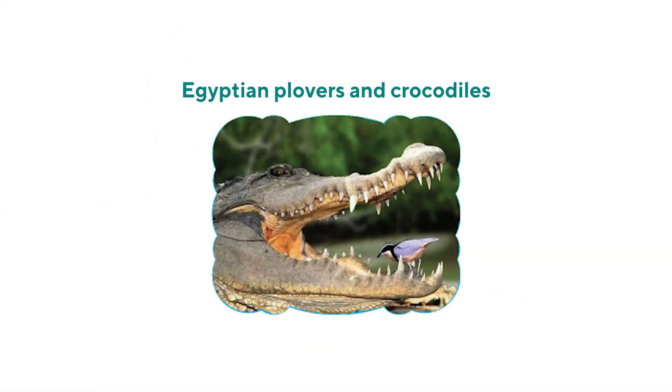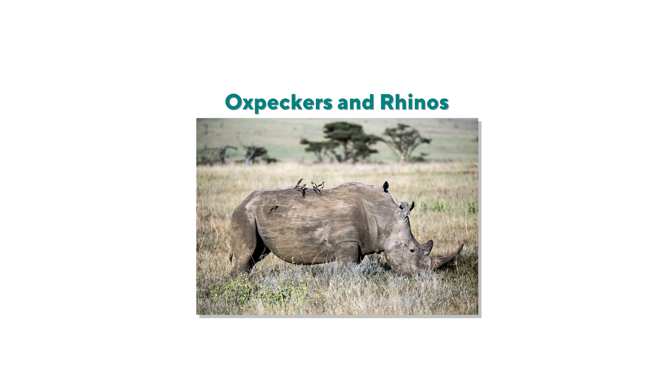The second example of mutual helpers is Egyptian plovers and crocodiles. These little birds feed on meat particles stuck between the teeth of crocodiles. The birds happily feed on the decayed meat, and the crocodiles get clean teeth without a dentist's appointment! The third example is ox peckers and rhinos — small birds that perch on rhinos, eating ticks and insects. The rhinos stay clean and the birds are fed. Both are mutual helpers.